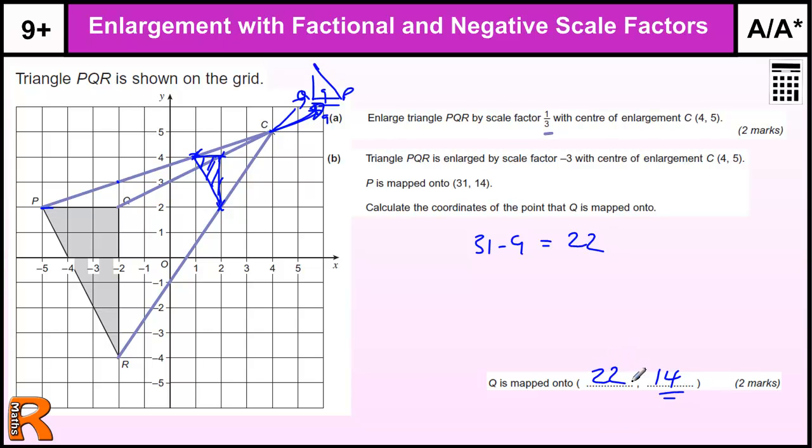A lot of people get the 14, not many people get the 22, most people put 40 or something bigger than 31, because they don't realize it's been flipped over. There's two marks, one for each number.